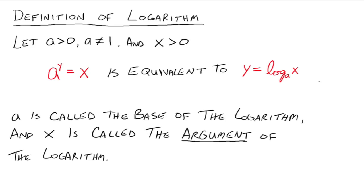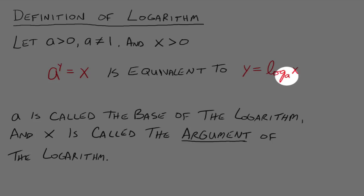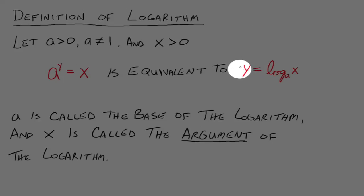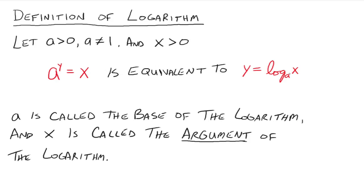The a here is called the base of the logarithm, and this x is called the argument of the logarithm. Log base a of x — all of that is one notation. This a written as a subscript on the logarithm is the same a in the base, the y in the exponent is the same y, and the x on the left is the same x you're taking the log of. Once you see the pattern, it's kind of nice.